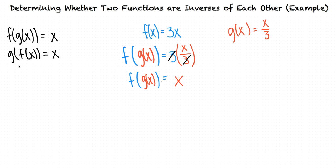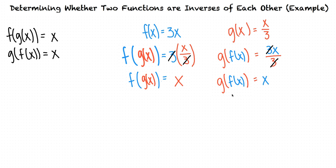Now let's find g of f of x. We can do this by taking the function g of x equals x over 3 and substituting f of x, which equals 3x, in for x. The threes here will cancel out, and we're left with g of f of x equals x. So here we see that both the composition f of g of x and the composition g of f of x equal x because the two functions are inverses of each other, and they undo each other.